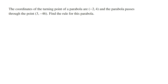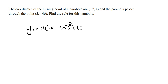To find the rule of a parabola, whenever you're given the coordinates of the turning point — which is also known as the vertex — you need to use the general rule for a parabola written in turning point form. This is y is equal to a times x minus h, all squared, and then plus k. Where the value of a is some dilation factor, the value of h is the x-coordinate of the turning point, and the value of k is the y-coordinate of the turning point.